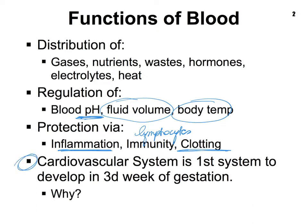Our cardiovascular system is the first organ system to develop in the embryo, starting to form in the third week of gestation. This makes sense because the blood provides tissues with oxygen and nutrients and removes carbon dioxide and wastes. In order for cells to divide and tissues to develop properly to form other organs, the heart must pump blood through blood vessels — so the cardiovascular system needs to develop as soon as possible.